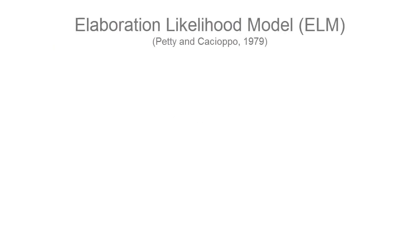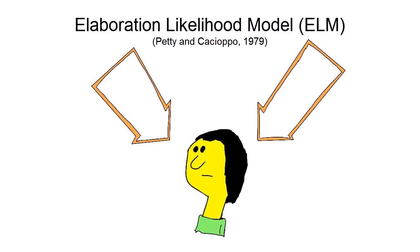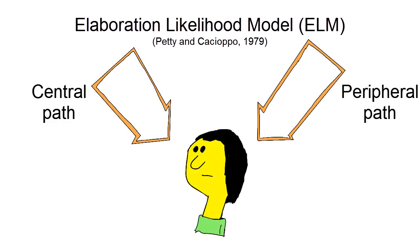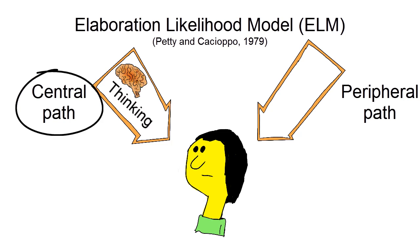A very different theory that makes use of the cognitive shortcut idea is the Elaboration Likelihood Model, or ELM in short. It was proposed in 1979 that information can be processed through a central and a peripheral path. When recipients process via the central route, they think about the message extensively, and the message passes through the different processing stages.